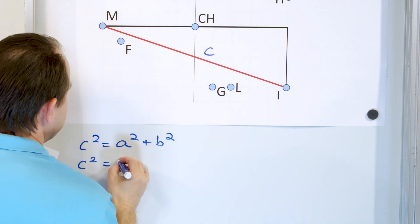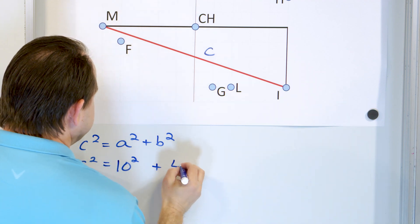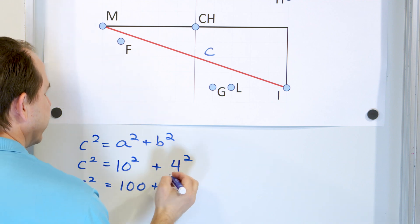And then the other side is one, two, three, four, four squared. So we have 10² is 100 and then 4², four times four is 16.